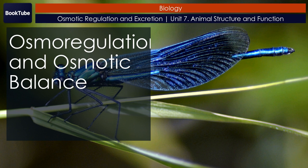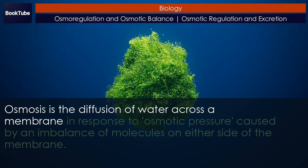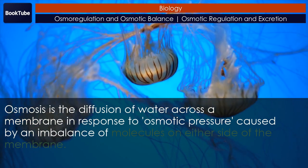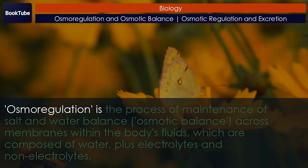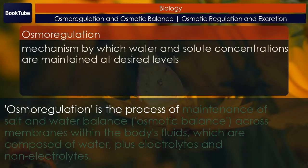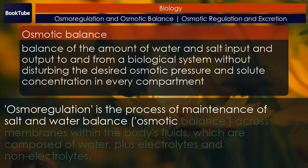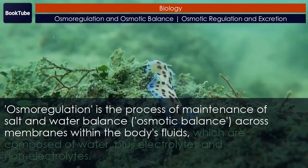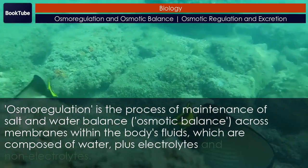Osmoregulation and osmotic balance. Osmosis is the diffusion of water across a membrane in response to osmotic pressure, caused by an imbalance of molecules on either side of the membrane. Osmoregulation is the process of maintenance of salt and water balance — osmotic balance across membranes within the body's fluids, which are composed of water plus electrolytes and non-electrolytes.